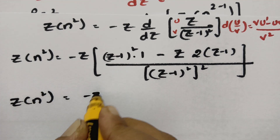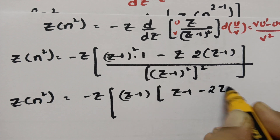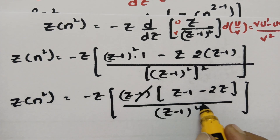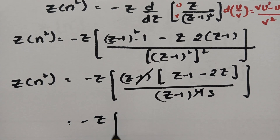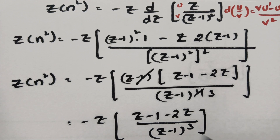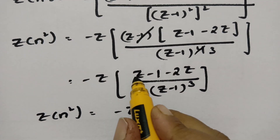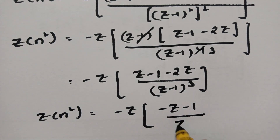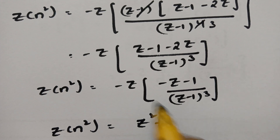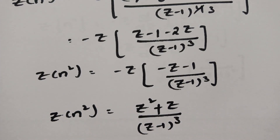After cancellation, this becomes minus z times of z minus 1 minus 2z by z minus 1 whole cube. Simplifying: z minus 1 minus 2z gives minus z minus 1. Multiplying by minus z, Z of n square equals z squared plus z by z minus 1 whole cube. This is our Z of n square answer.